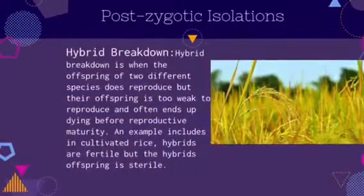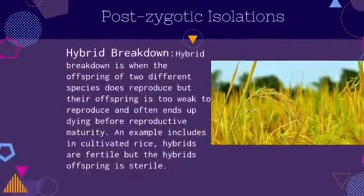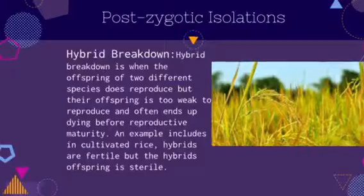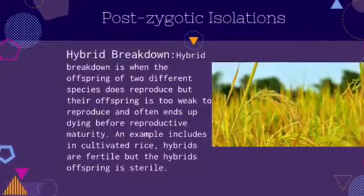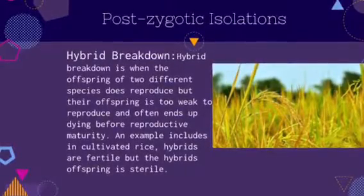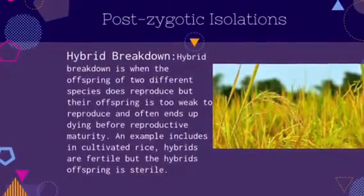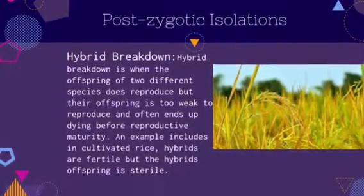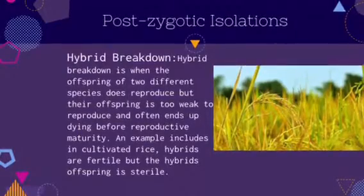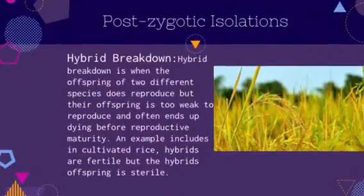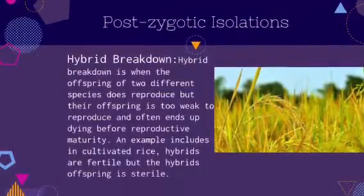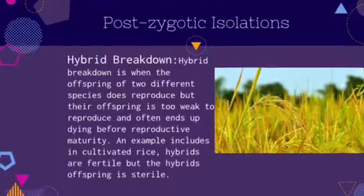Hybrid breakdown is when the offspring of two different species does reproduce, but their offspring is too weak to reproduce and often ends up dying before reproductive maturity. An example includes cultivated rice, where hybrids are fertile, but the hybrid's offspring is sterile.